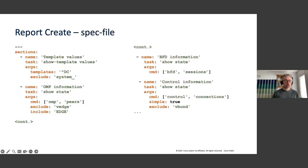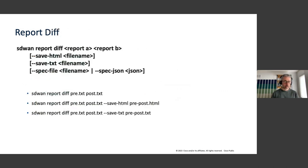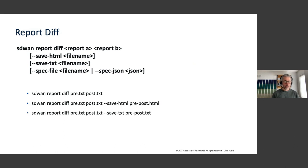The different report options include 'sdwan report create', which creates the default report and saves it to a post text file. You can also, as you create a new report, perform a diff between the current 'post.txt' and a previous 'pre.txt' file.